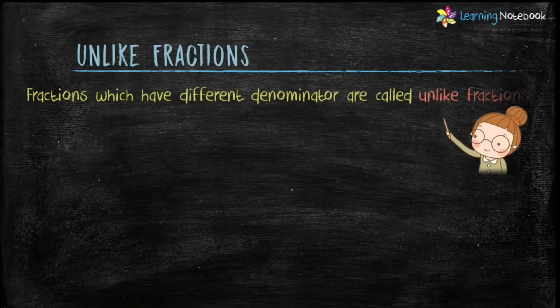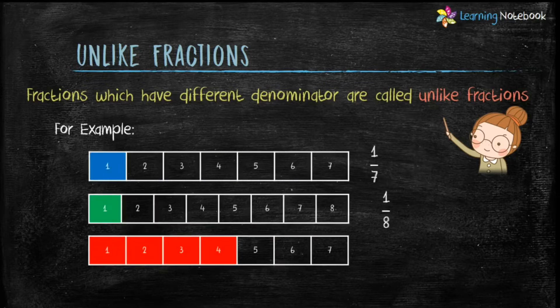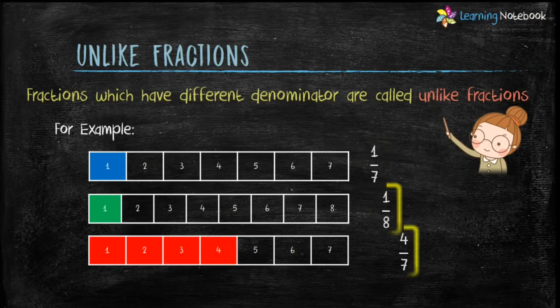Now let's see what are unlike Fractions. Fractions which have different denominator are called unlike Fractions. Let's take the same example. Here, 1 by 7 and 1 by 8 are unlike Fractions because their denominators are different. Similarly, 1 by 8 and 4 by 7 are unlike Fractions — reason being the same — their denominators are different.